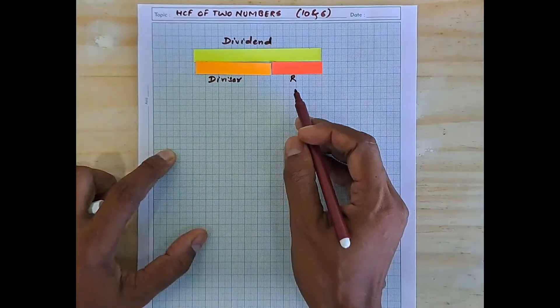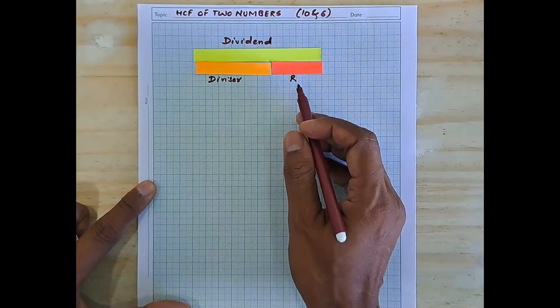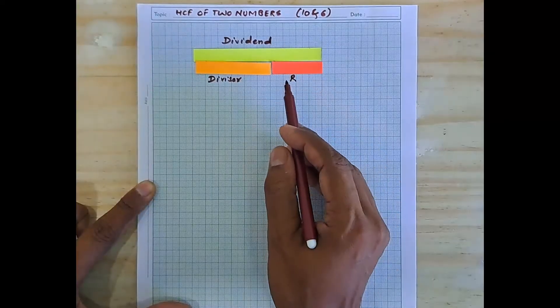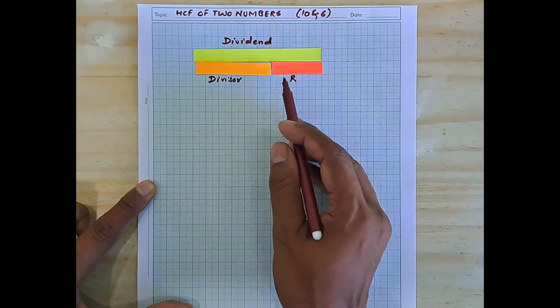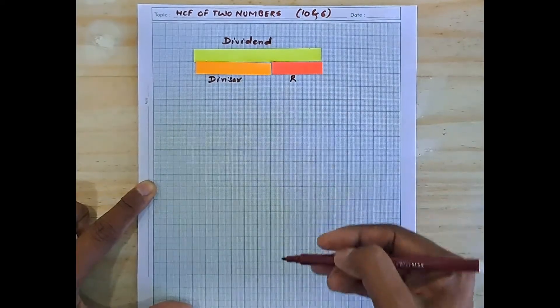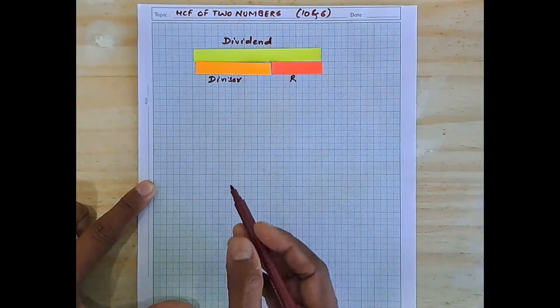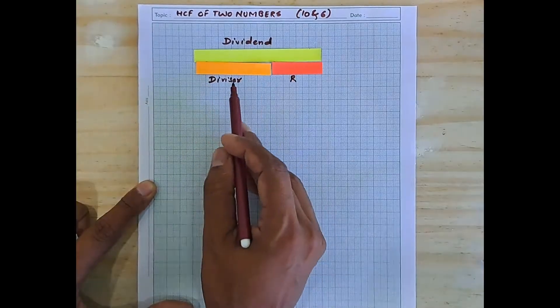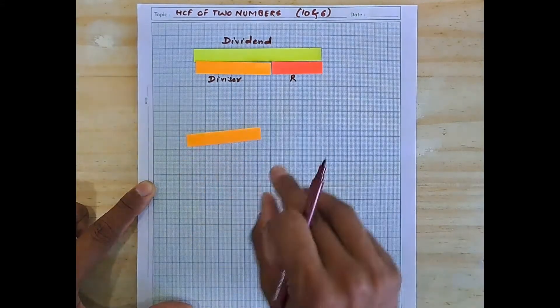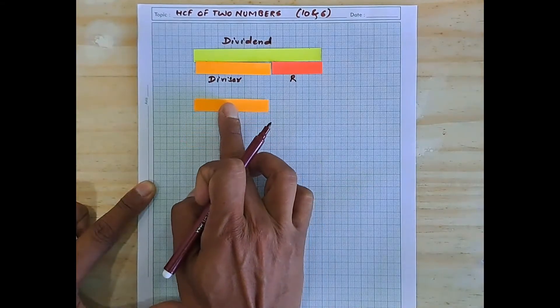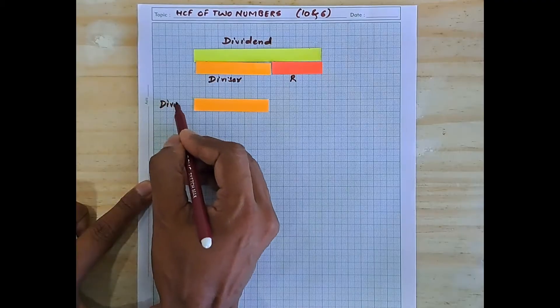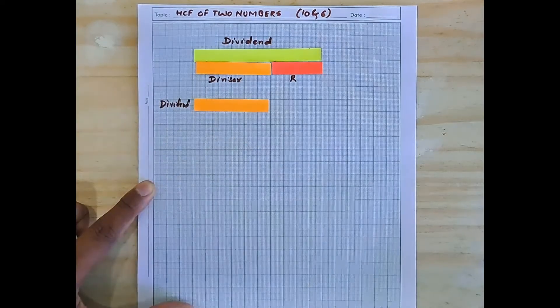Now the remainder is 4. It is not 0, right? Whenever we have to find the HCF, we intend to find the remainder in terms of getting a 0 at the end. What we are going to do is, the divisor was 6 here, so I will have another sheet which measures 6 centimeter. Now this becomes my new dividend. That means this is the number being divided now.